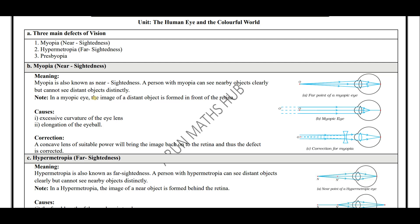In a myopic eye, the image is formed in front of the retina. You can see in this figure — in a myopic eye, the image is formed in front of the retina. What are the causes for myopia? Excessive curvature of the eye lens and elongation of the eyeball. These are the 2 causes for myopia.